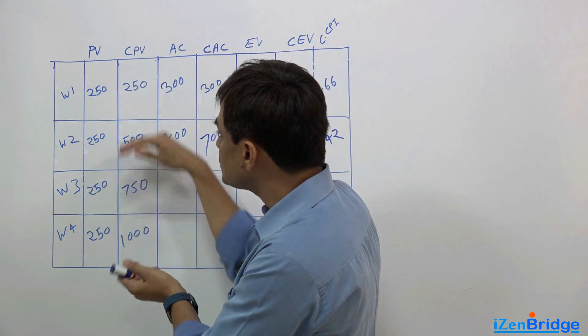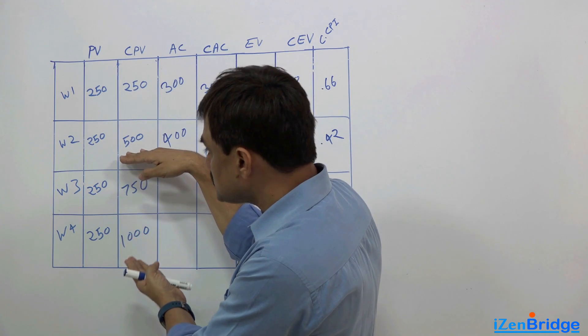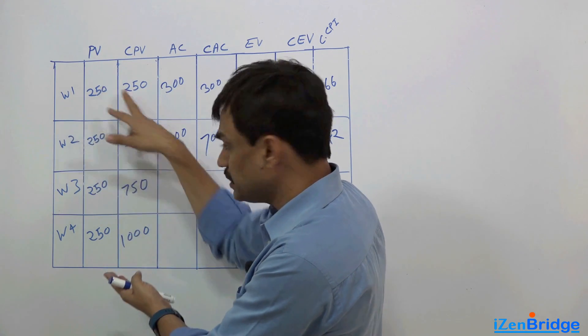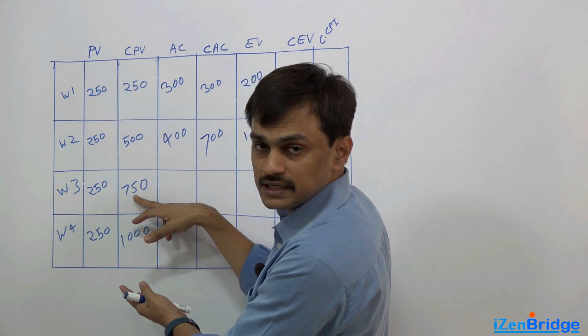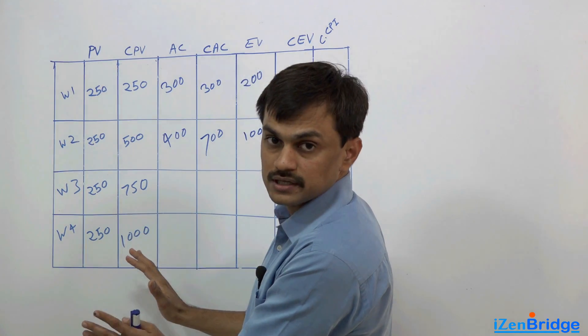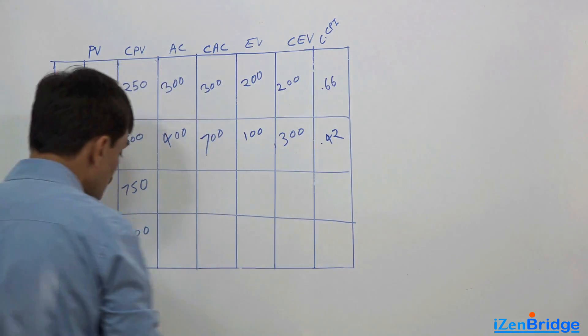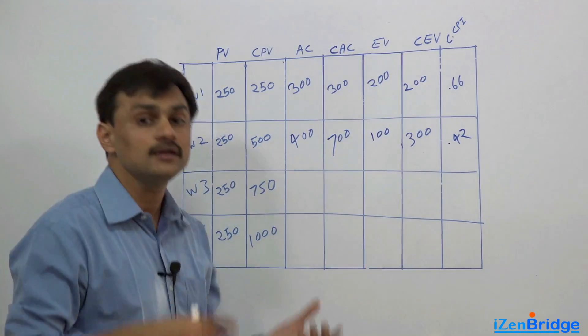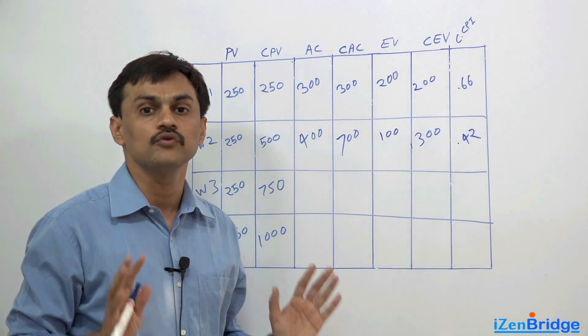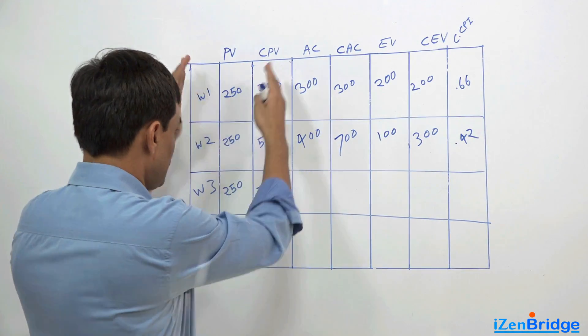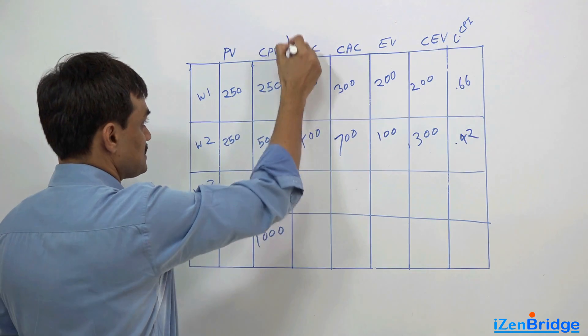Our planned value is $250 per week which makes the whole work $1000. So our cumulative planned value week on week is: first week $250, second week $500, third week $750, and the fourth week is $1000. So we are planning to spend $1000 and we are planning to earn $1000 by the end of 4 weeks.